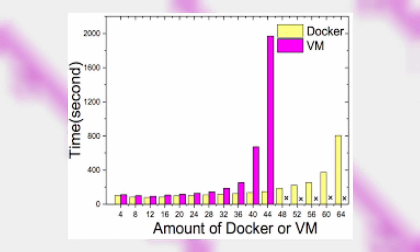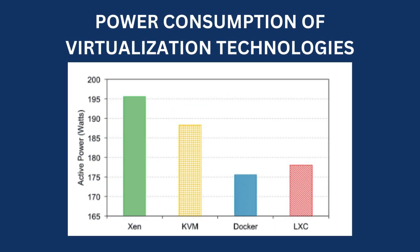Due to less overhead and sharing resources with the underlying operating system, Docker containers have a very fast boot-up time compared to virtual machines. For home servers, low resource usage also means lower power consumption, so it can save a lot of energy cost while providing the same amount of services.